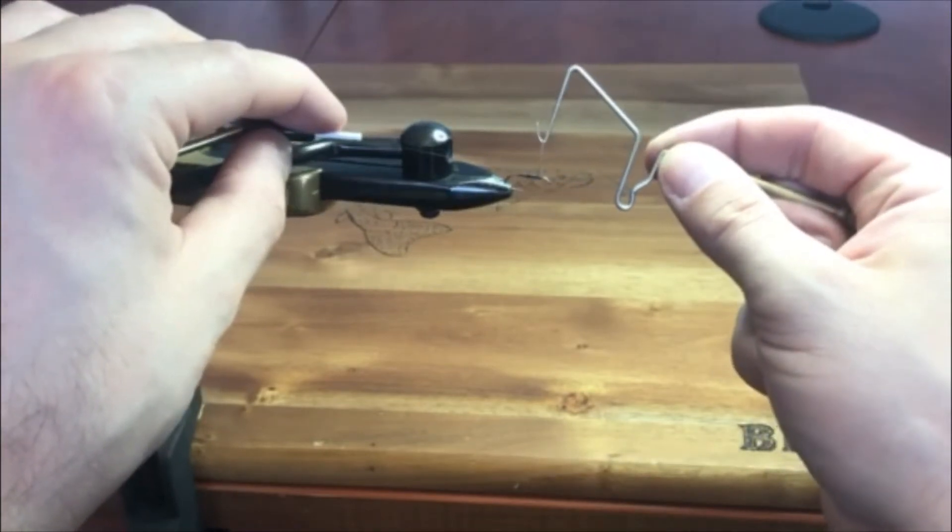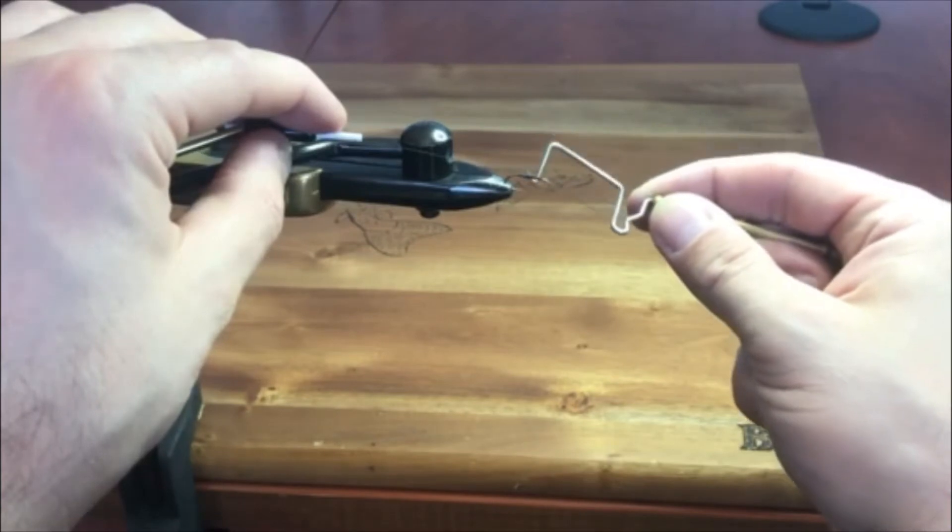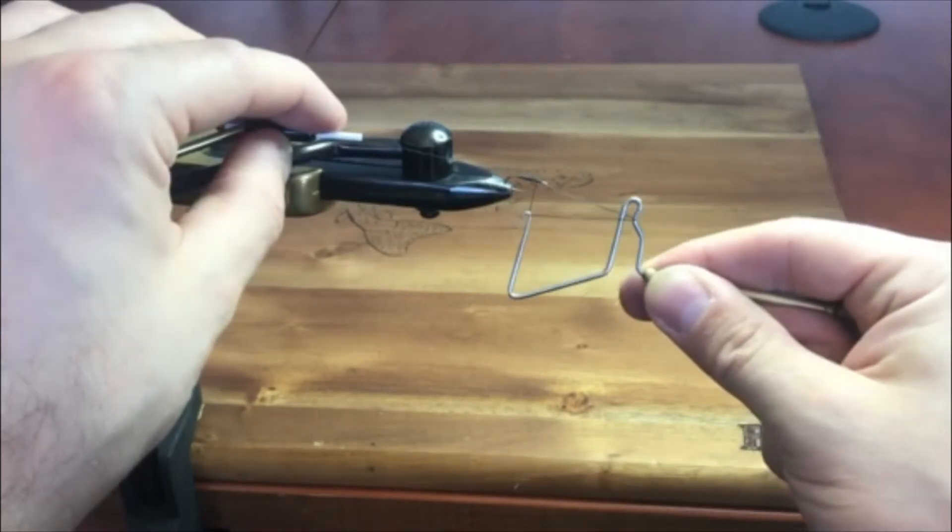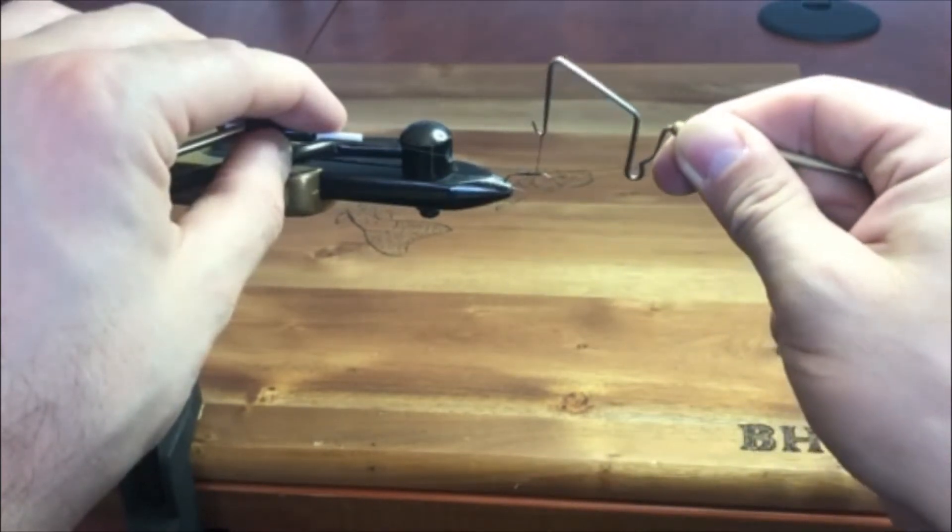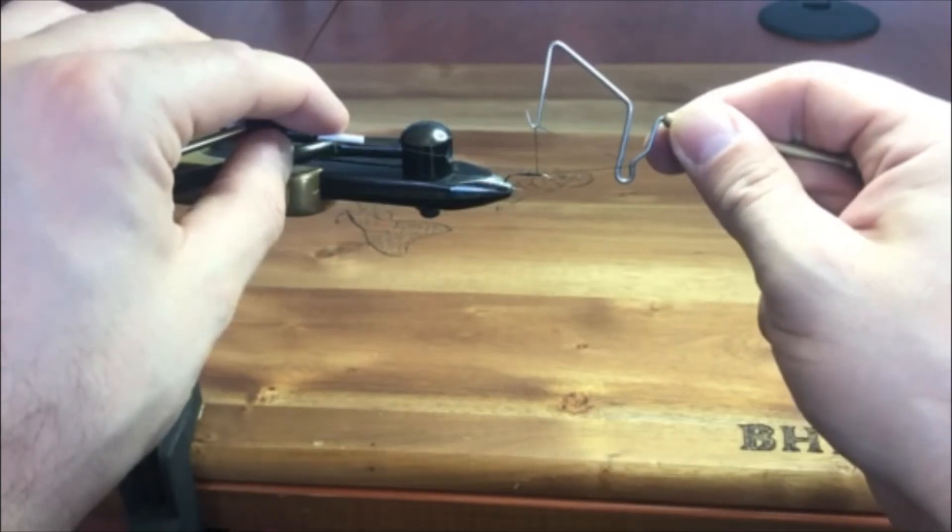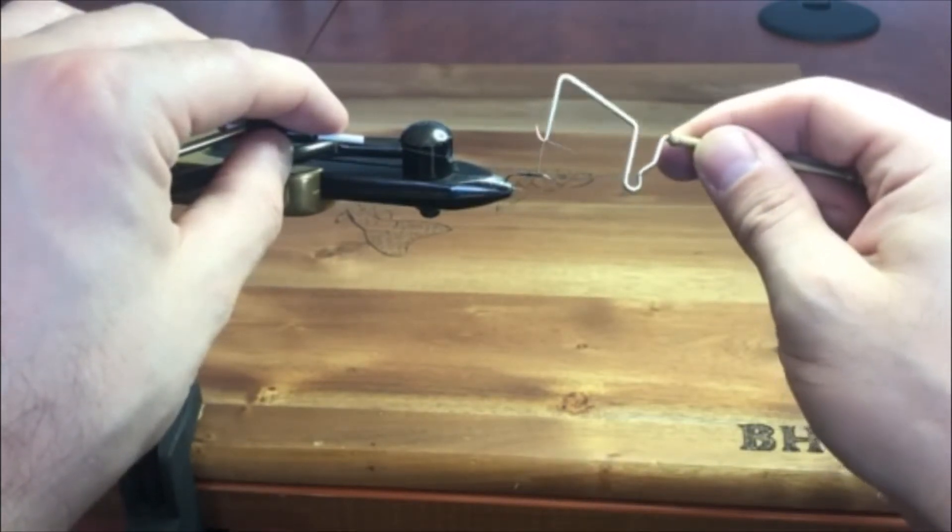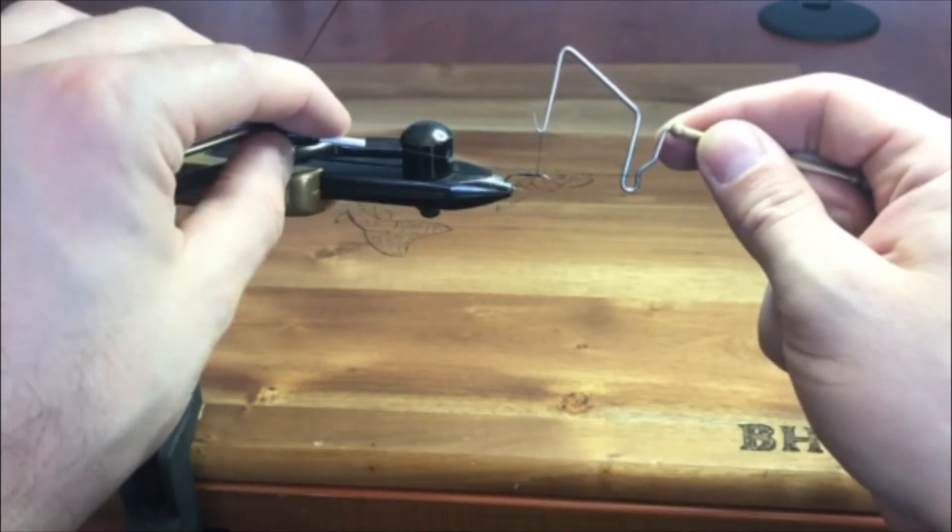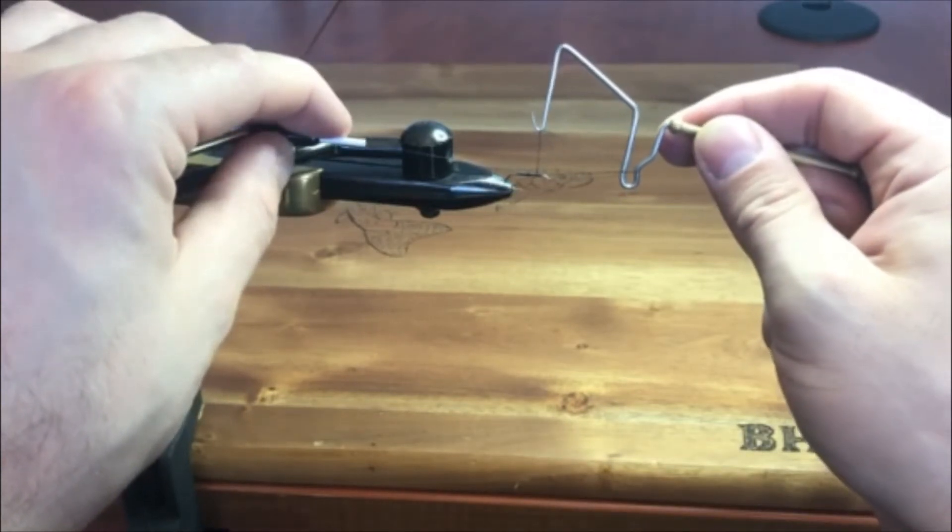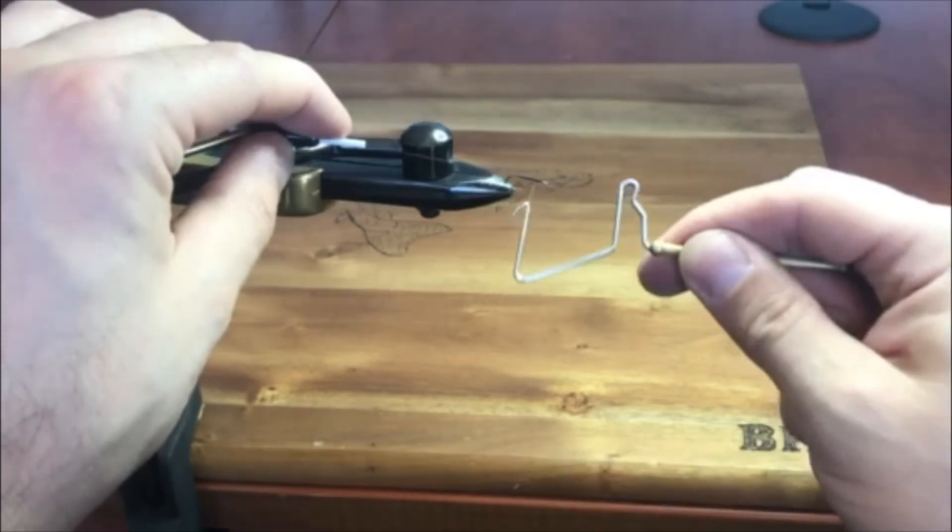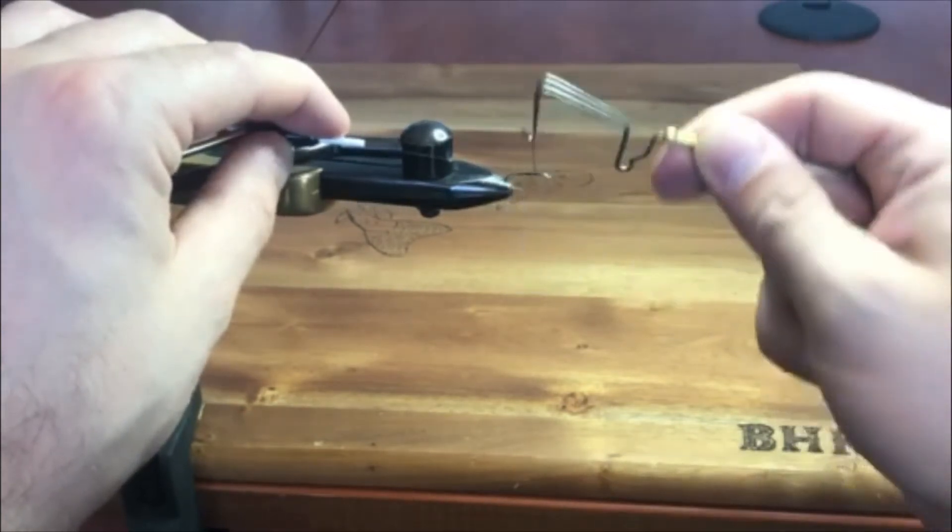With my right hand I'm going to come underneath the hook shank and we're going to do one complete revolution with the whip finish tool. Now to complete a fly you're going to do about three or four complete revolutions. So there's two, three...